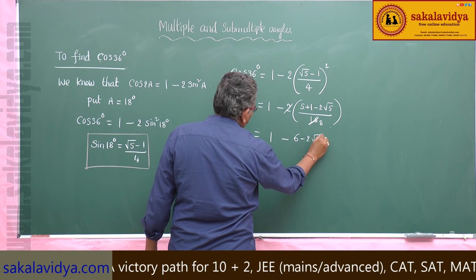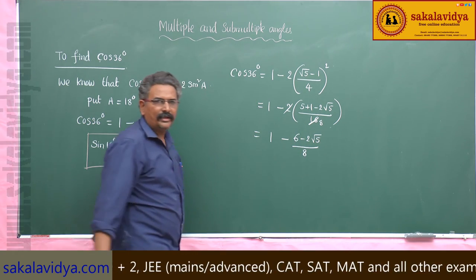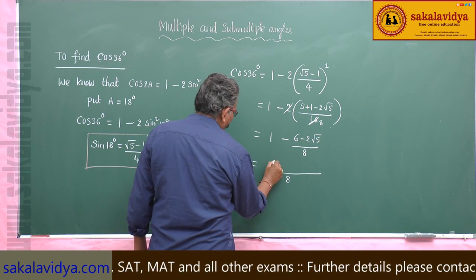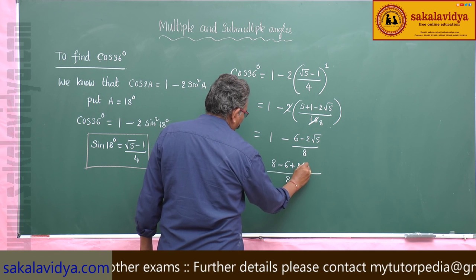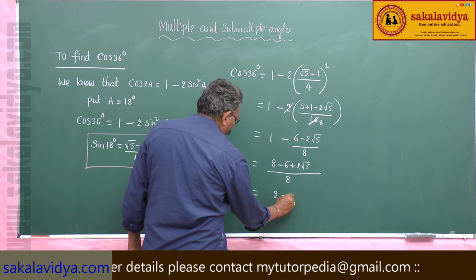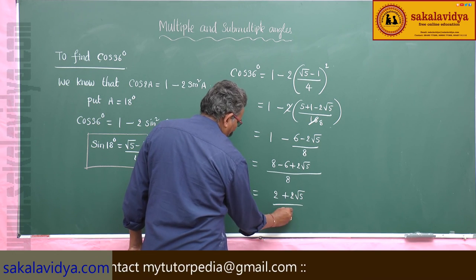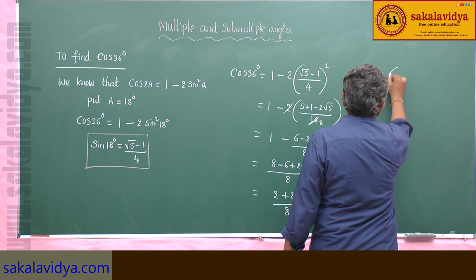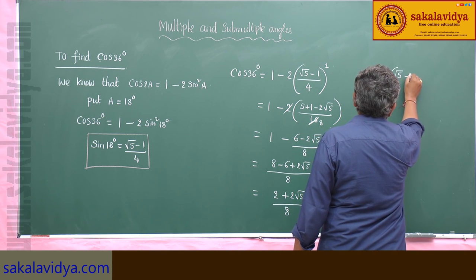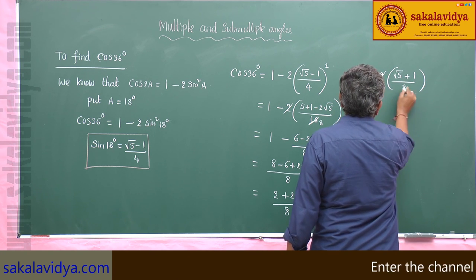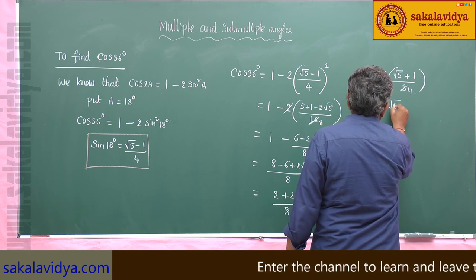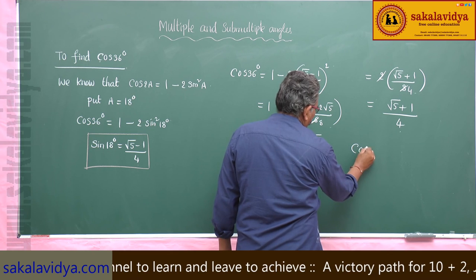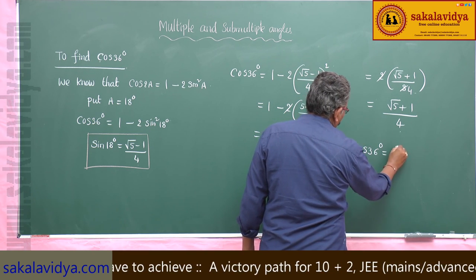So (8 minus 6 plus 2√5) divided by 8. This is (2 plus 2√5) divided by 8. Taking 2 as common, we get (√5 plus 1) divided by 4. Therefore cos 36 degrees is equal to (√5 plus 1) divided by 4.